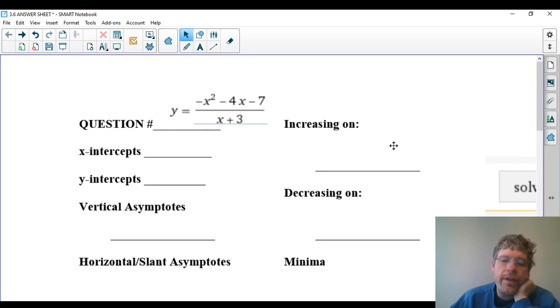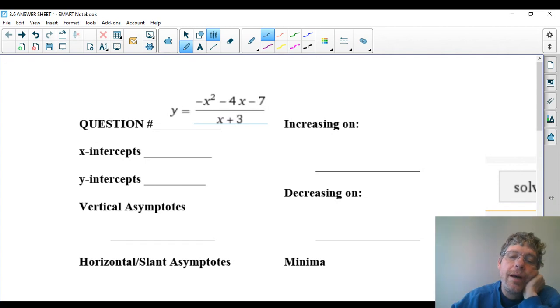So the first thing I want to do is find the x-intercepts. The x-intercepts are where the top equals 0. Now, you will notice, the top doesn't factor. So to do this, you'd have to use the quadratic formula.